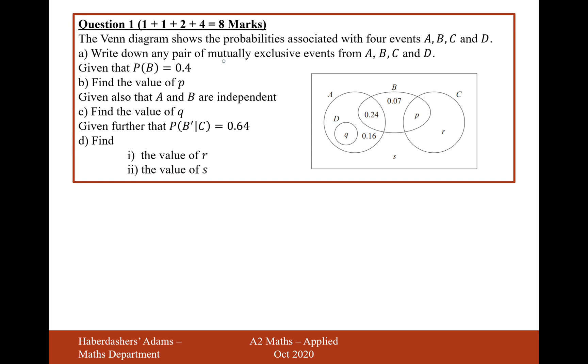So we could say, for example, A and C are mutually exclusive because there is no overlap in the Venn diagram. Alternatively, you could say D and C or even D and B are mutually exclusive. Any of those answers, I'd put A and C.